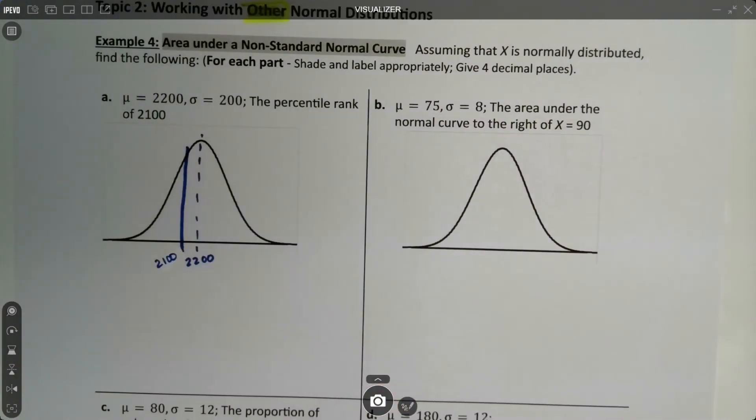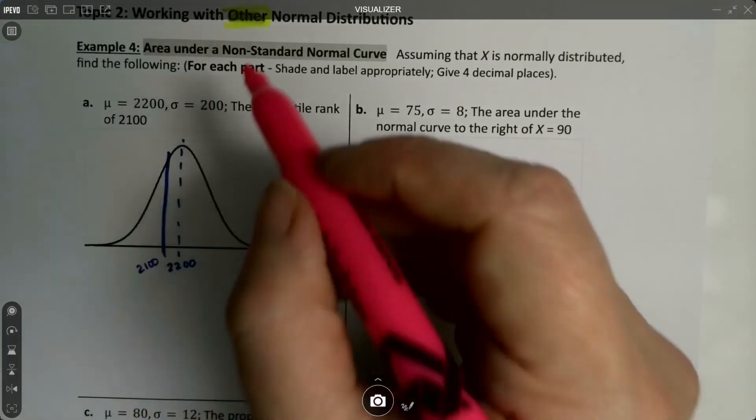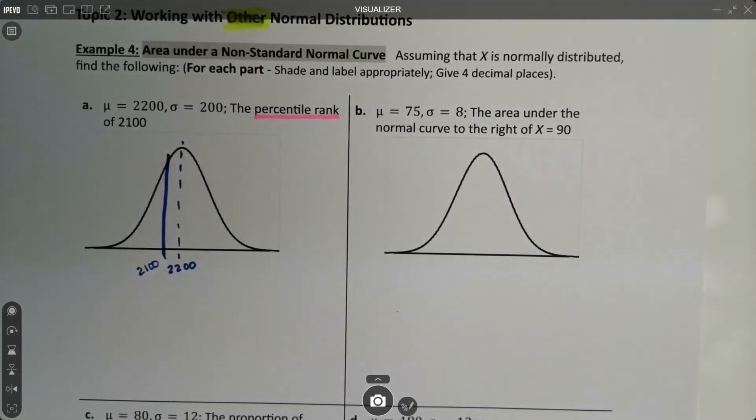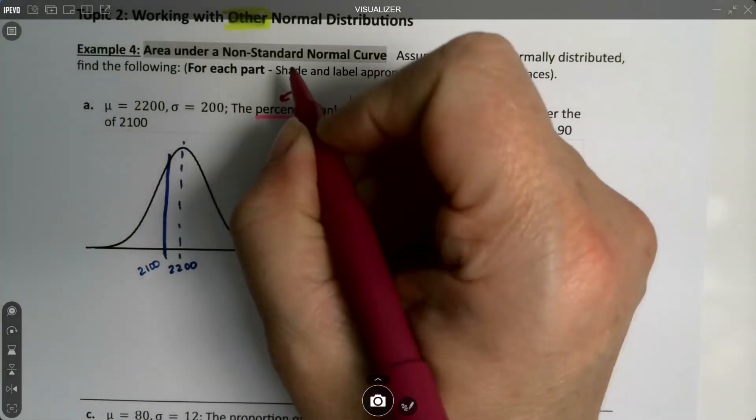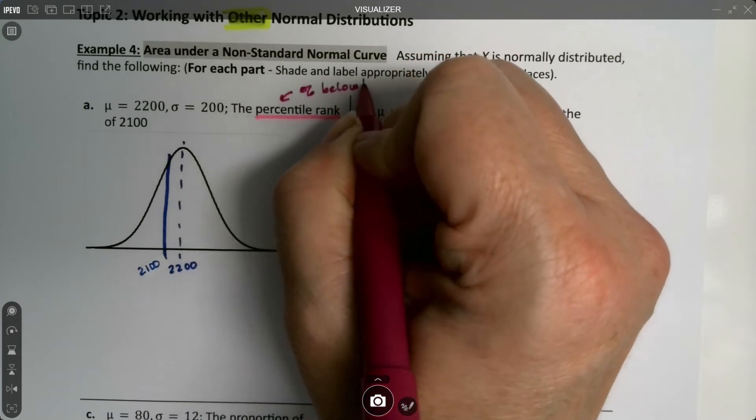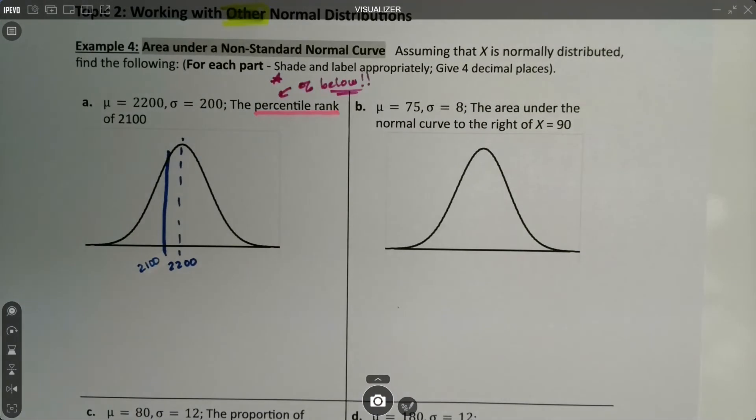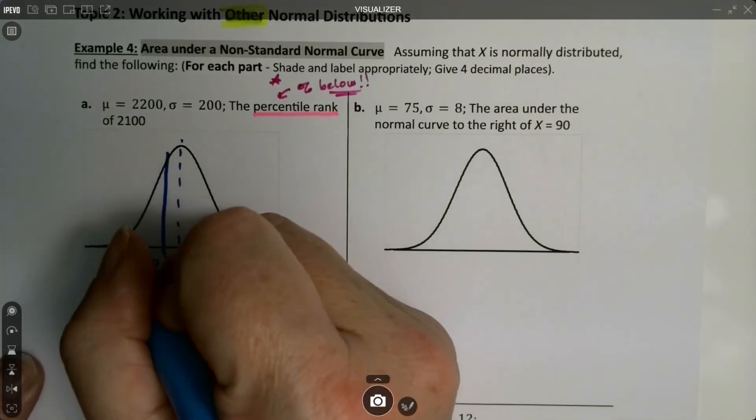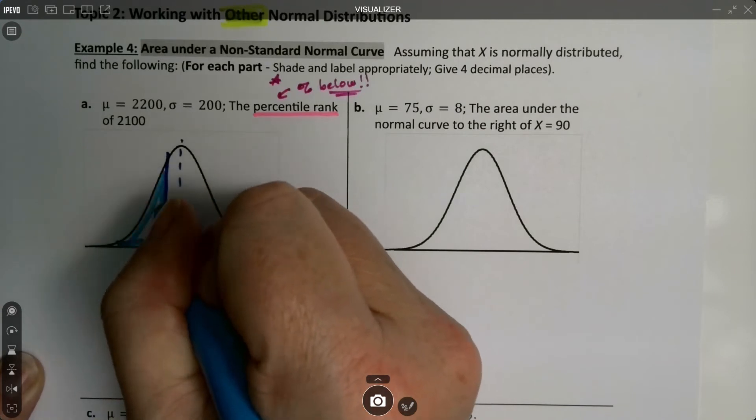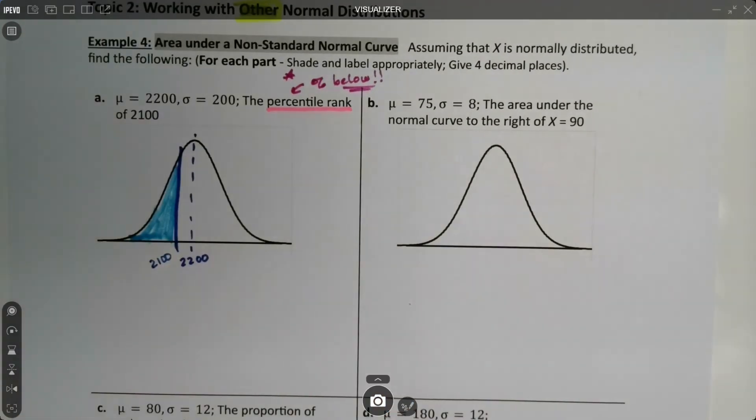Now percentile rank, we learned before, that's the percentage below. We learned that in chapter 3 and we had a note about it about three pages before this. So it's the percentage below. So that means that I'm going to shade to the left. It's important to know which direction to shade because that's how I'm going to figure out what I'm doing in StatCrunch.